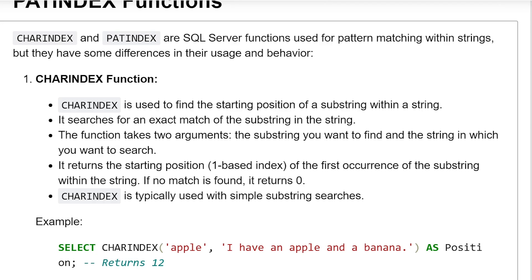CHARINDEX function: CHARINDEX is used to find the starting position of a substring within a string. It searches for an exact match of the substring in the string. The function takes two arguments — the substring you want to find and the string in which you want to search. It returns the starting position (one-based index) of the first occurrence of the substring. If no match is found, it returns zero. CHARINDEX is typically used with simple substring searches.